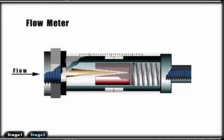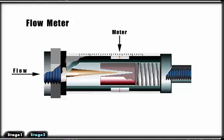As flow increases in the system, the magnetic piston begins to compress the spring, indicating the flow rate on the graduated scale.